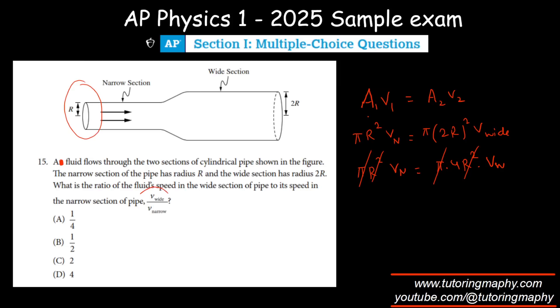And we are looking for wide over narrow. So let's divide v narrow both sides. This will become v wide over v narrow and then divide 4 both sides. So 1 over 4 will become v wide over v narrow, which is option number A.